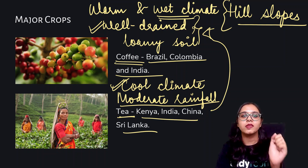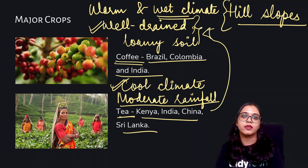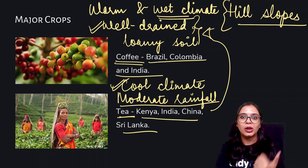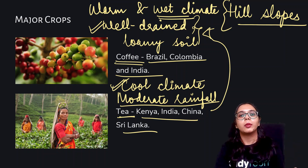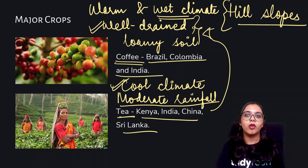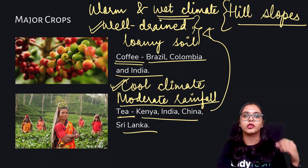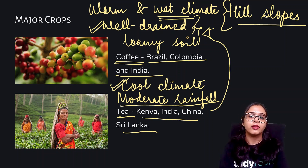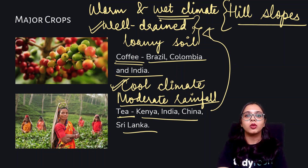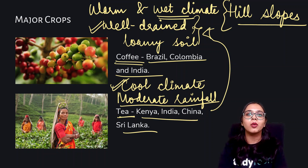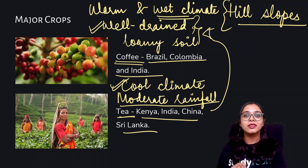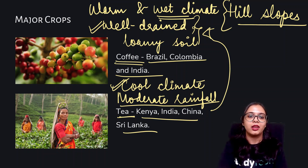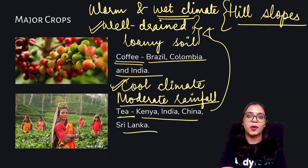So these are the conditions required for the growth of each of these individual crops. We have talked about soil texture and climate conditions including temperature, rainfall, and humidity — which you can infer from the amount of rainfall. Next, we'll be talking about agricultural development — the important steps we can take to ensure that each and every one of us has access to safe, healthy, and nutritious food. That will be discussed in the next part of the chapter.